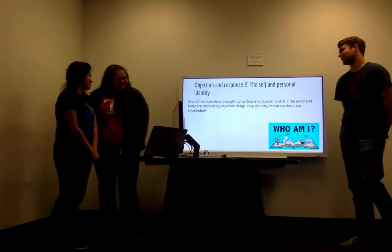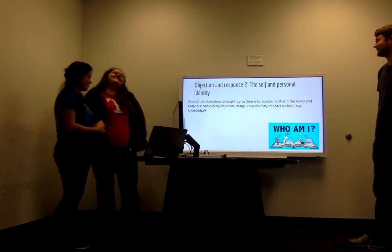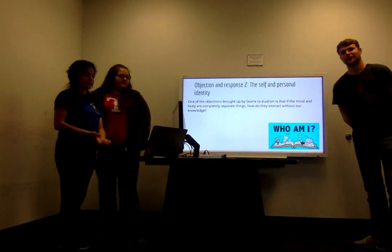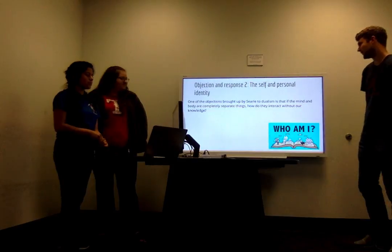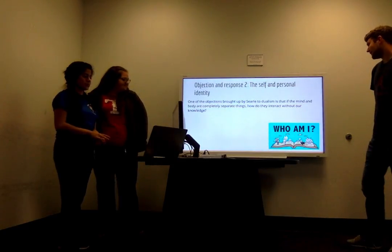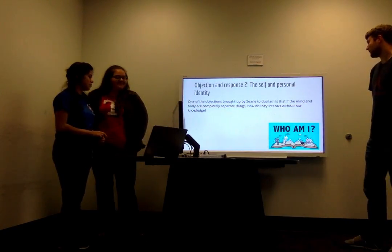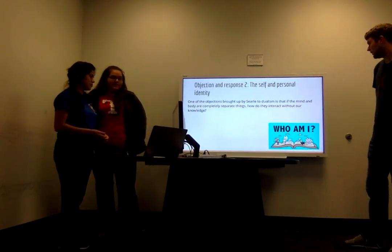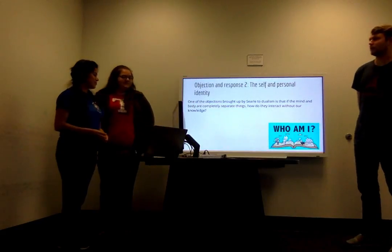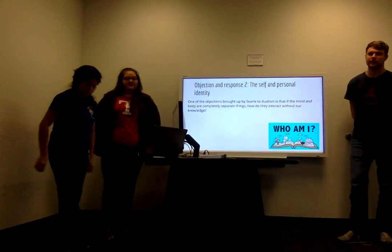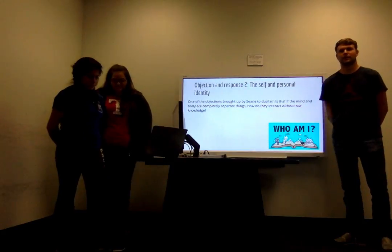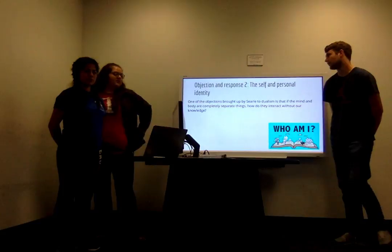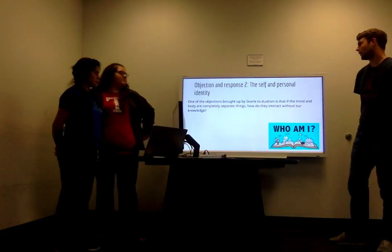The second objection is the self and personal identity, which comes from Searle's paper on the 12 Things Against Dualism. He brought up the point that if the mind and body are completely separate essences, how do they interact without our knowledge? How do these two completely separate things come together all the time, every day, 24/7, to form who a person is without that person even being aware of it?